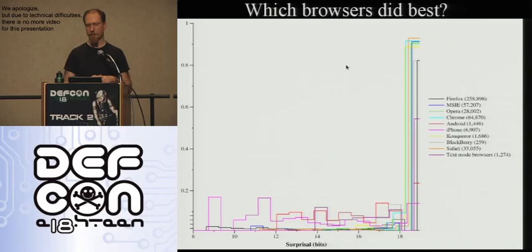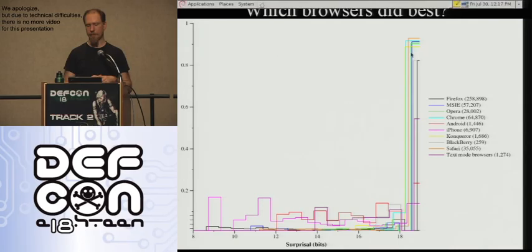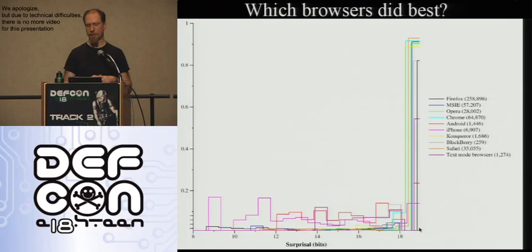Any graph showing everything in this half-million-point dataset will be complicated. One graph shows, for each browser category — Firefox, IE, Opera, Chrome, Android, iPhone, Konqueror, Blackberry, Safari, and a lumped group of Lynx and other text-mode browsers — how good or bad the fingerprint uniqueness was. Anything on one end represents complete uniqueness in our dataset; the other end shows the least-revealing fingerprints.